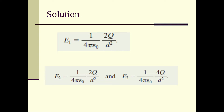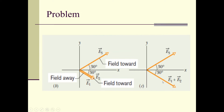First step: we find E1 using the formula — E1 = k(2q)/d², where d is the distance from q1 to the origin and 2q is the charge value of q1 (positive). Similarly, E2 = k(2q)/d², and E3 = k(4q)/d², where the charge value for q3 is 4q over d².